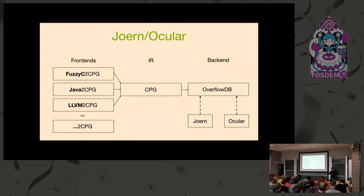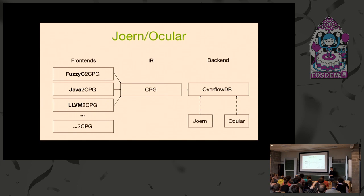If you're familiar with LLVM or Clang and its architecture, you'll recognize this. CPG is just another intermediate representation that presents the program. At the front end there are front ends for each language that emit the CPG, and then CPG is used by the back end. Originally we were using Neo4j, the graph database, but it's too general and doesn't fit our needs — it was too slow because for big projects you need to load the whole database into memory, which can require hundreds of gigabytes.